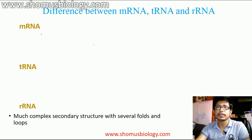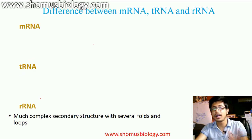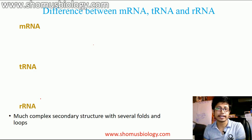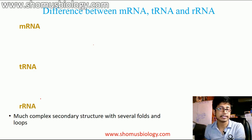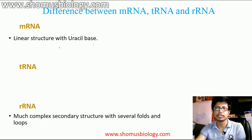We will talk about the structural differences between these three. These three RNAs are important in a combinative fashion. All three RNAs have important roles ultimately in the process of transcription and protein synthesis, and we need all of them for specific work during protein synthesis. For example, mRNA has mostly a linear structure in its primary structure, with uracil bases present.